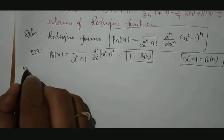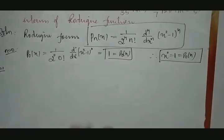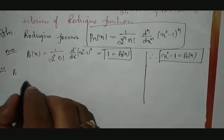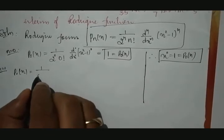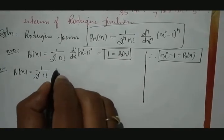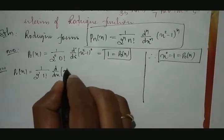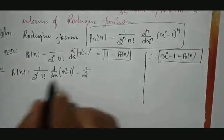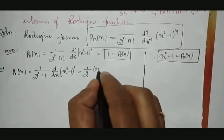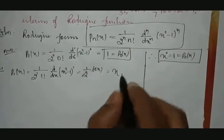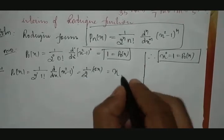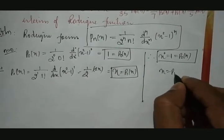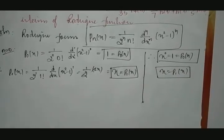If we put n = 1, then P₁(x) equals 1 divided by 2¹ into 1 factorial, times d/dx of (x² - 1)¹. This is 1/2 times the differentiation of x², which is 2x. The 2s cancel, giving P₁(x) = x. Therefore x = P₁(x), or P₁(x) = x.